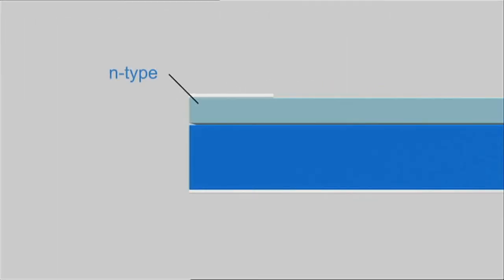The next step in solar cell production is diffusion. Here, a negatively charged phosphorus layer is added to each wafer's positively charged layer.